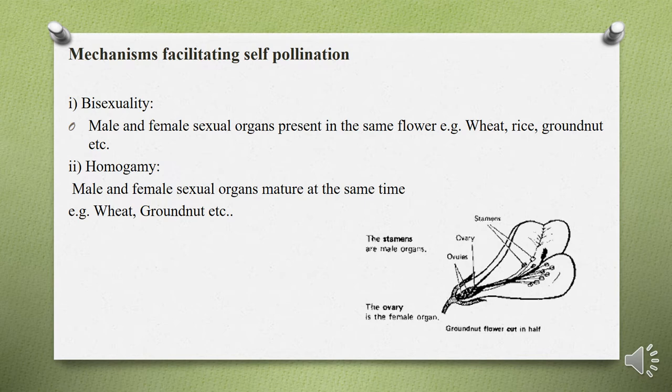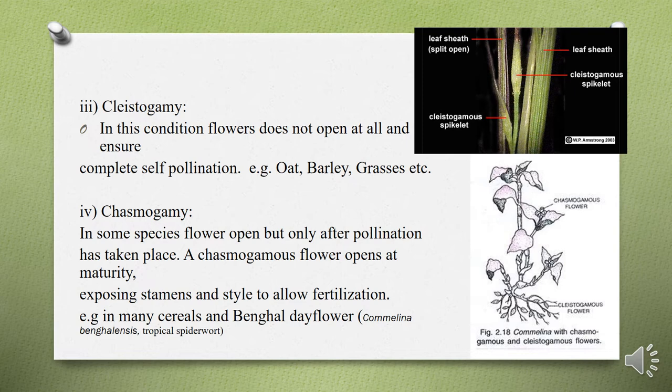The mechanisms that facilitate self-pollination include bisexuality — the condition when male and female sexual organs are present in the same flower — which may facilitate self-pollination. Homogamy is the condition where male and female sexual organs mature at the same time, which also facilitates self-pollination. Other factors include cleistogamy and chasmogamy.